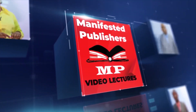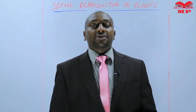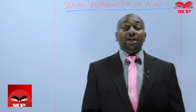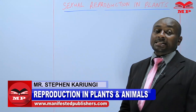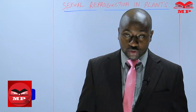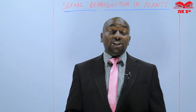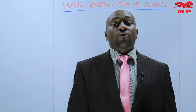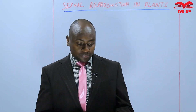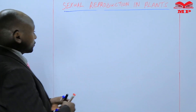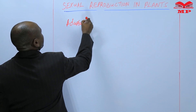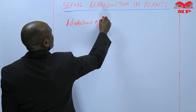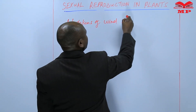Welcome to Manifested Publishers. Hello learners, my name is Stephen Kariungi. Welcome to today's biology lesson. Our topic of discussion is sexual reproduction in plants, and today we are continuing our study on pollination. We are going to look at the second agent of pollination, which is wind, and the adaptations of wind-pollinated flowers.